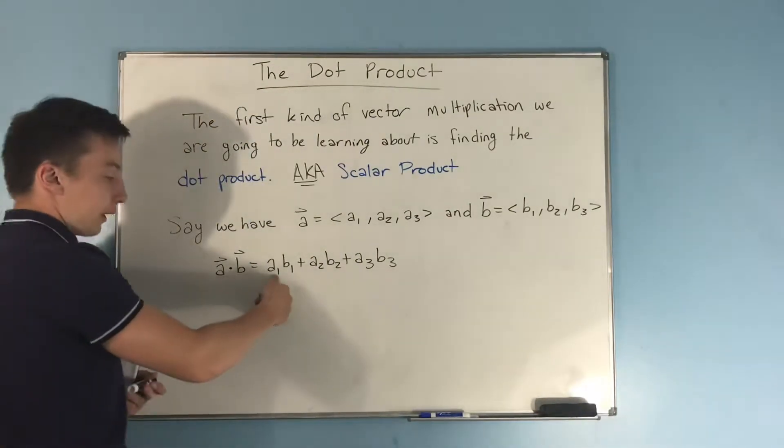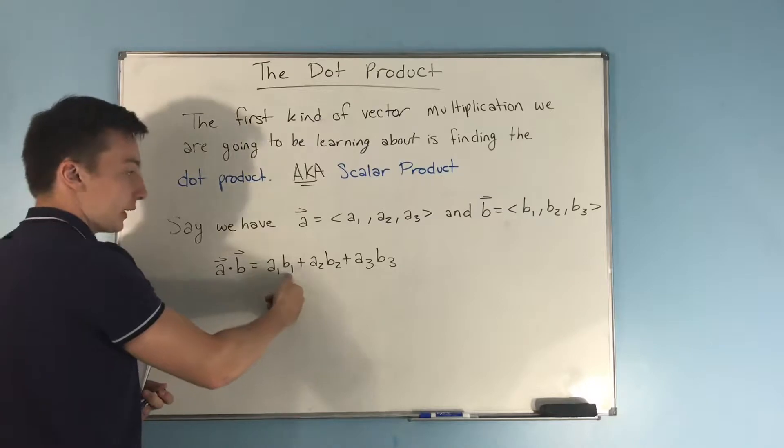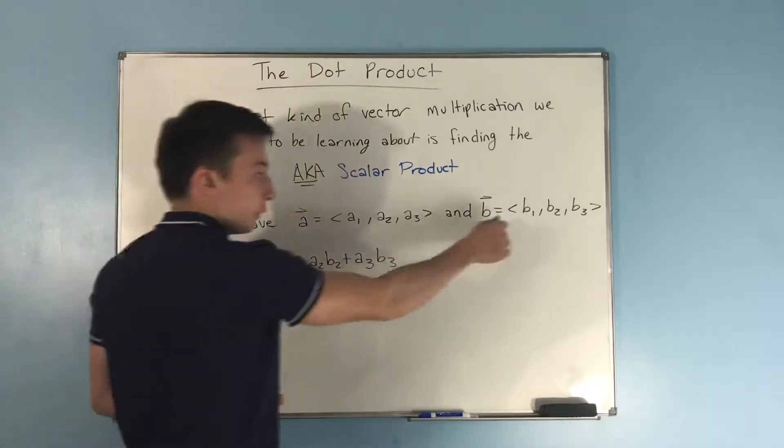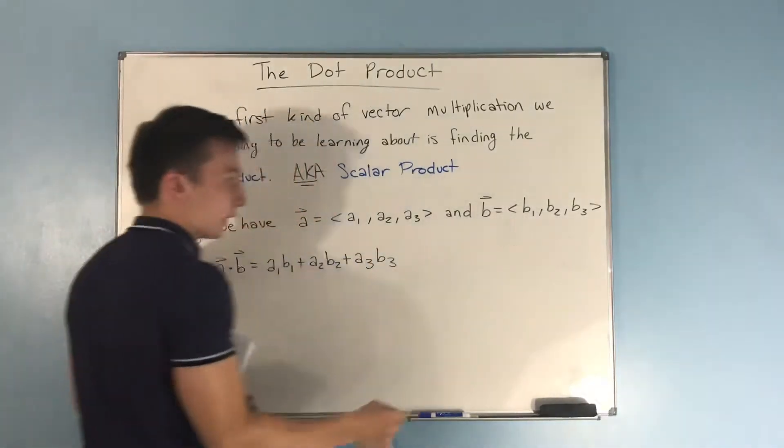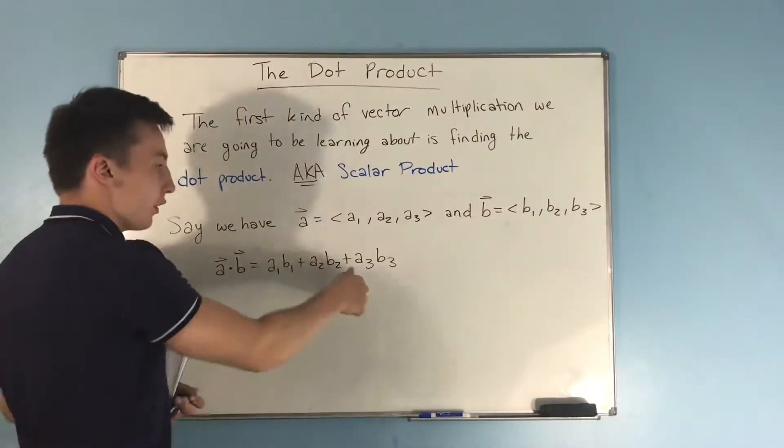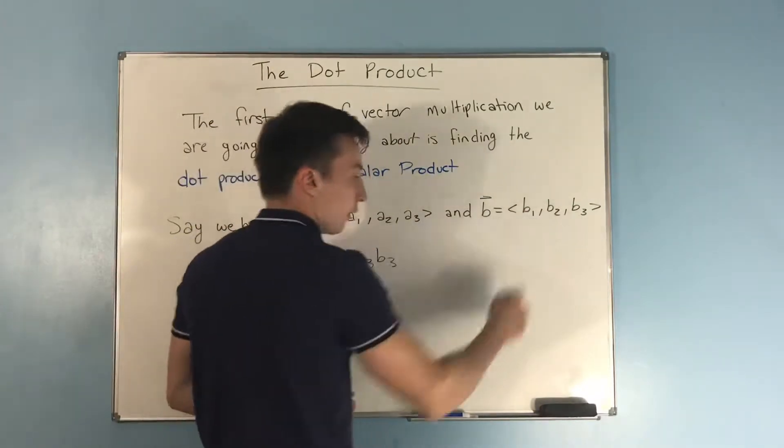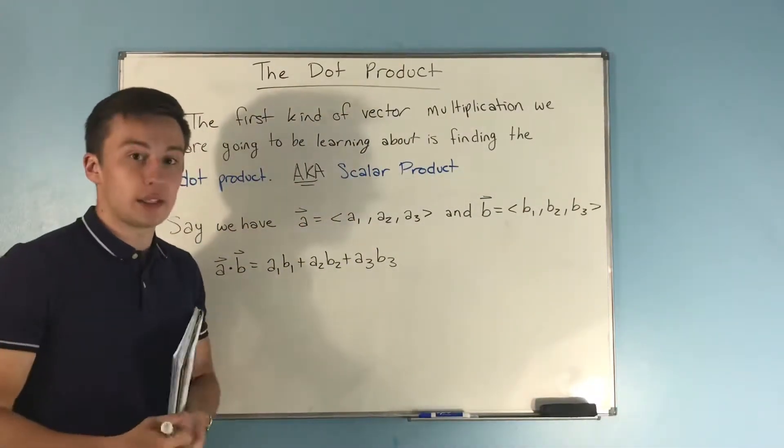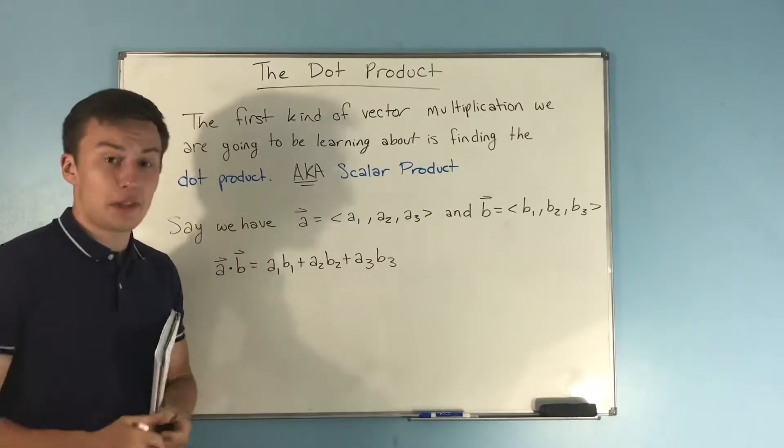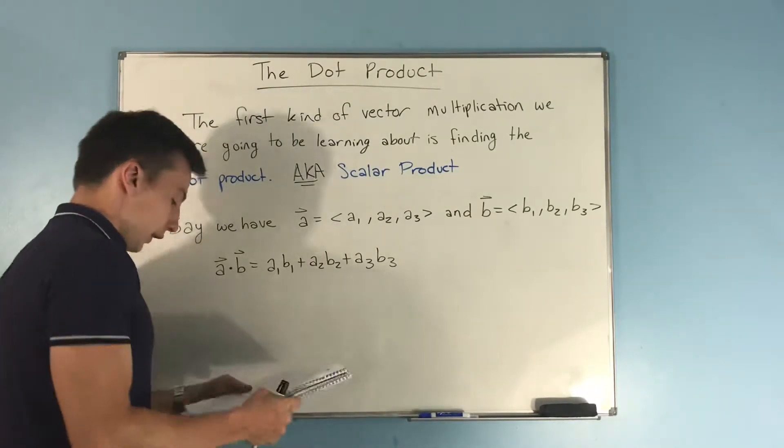your dot product will be a₁ times b₁, so you're multiplying your first two components, then adding your second set of components multiplied together, and then adding your third set of components multiplied together. Really a pretty simple process - finding the dot product is nothing difficult.